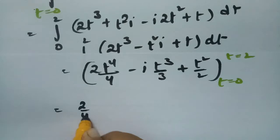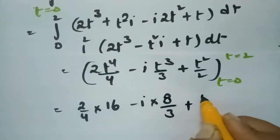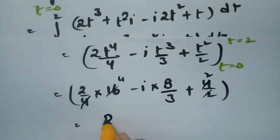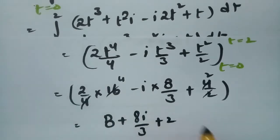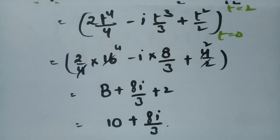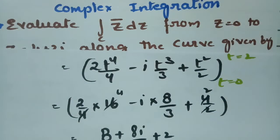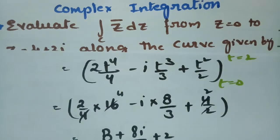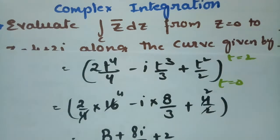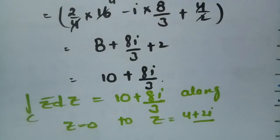Integrating with respect to t: [2·t⁴/4 - i·t³/3 + t²/2] from 0 to 2. Substituting t=2: 2/4·16 - i·8/3 + 4/2 = 8 - 8i/3 + 2 = 10 - 8i/3. Wait — the result is 10 + 8i/3.